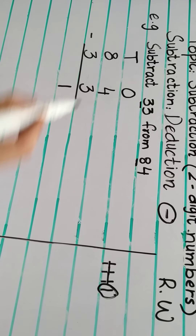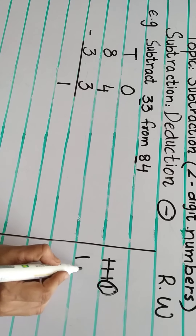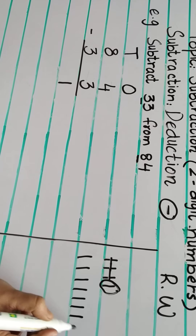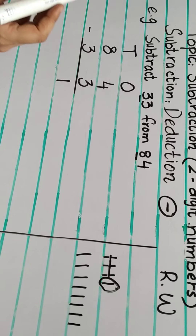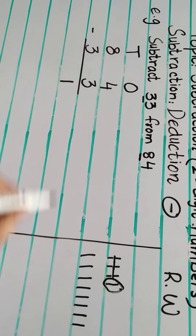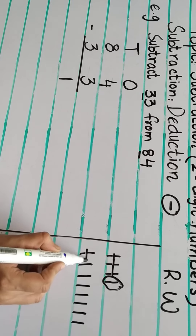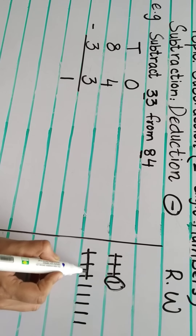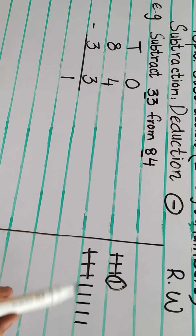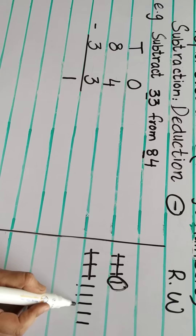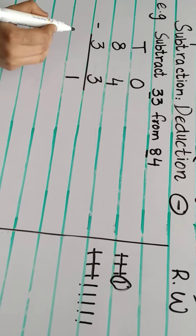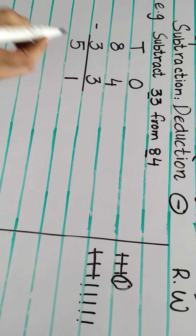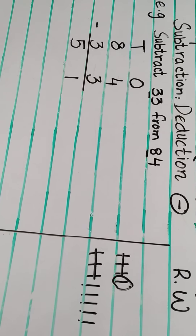Now the tens column. The first number is 8. Draw 8 lines: 1, 2, 3, 4, 5, 6, 7, 8. How many will we separate? 3. Cut 3 lines: 1, 2, 3. Count how many are left: 1, 2, 3, 4, 5. So the answer in the tens column is 5.